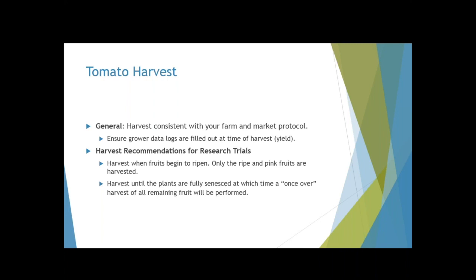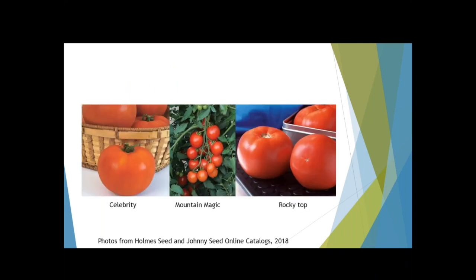For tomatoes, we harvest when fruits begin to ripen — only the ripe and pink fruits are harvested and counted on those yield logs. You can stop harvesting when the plants are fully senesced; we'd love for you to do a once-over of all remaining fruit at that time. Varieties included in this year's trial include Celebrity, Mountain Magic, and Rockita — nice red fruits, picked at pink stage.